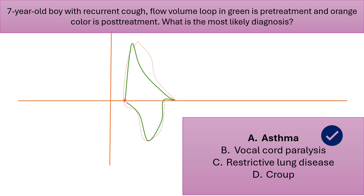You ask the patient to take a deep breath — the inspiratory looks normal. Then before treatment, you ask the patient to exhale as fast as possible, and the curve goes down in a concave shape — this is asthma. After treatment with beta-2 agonists, the expiratory changes to look normal. The inspiratory remains the same.